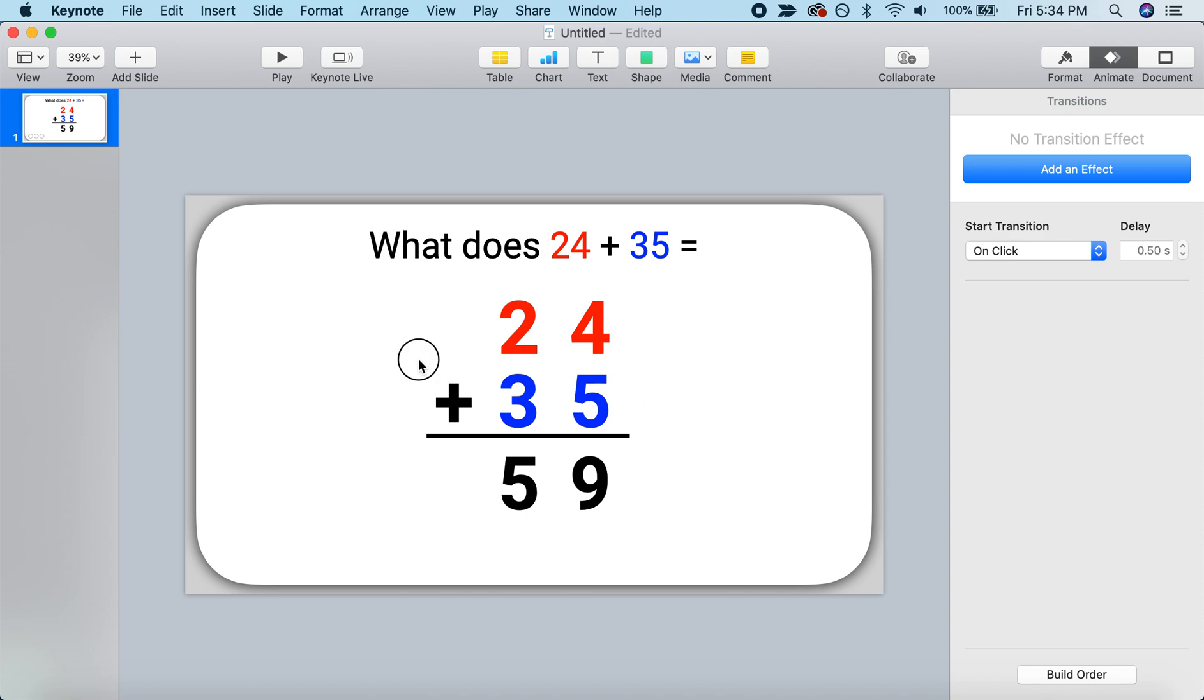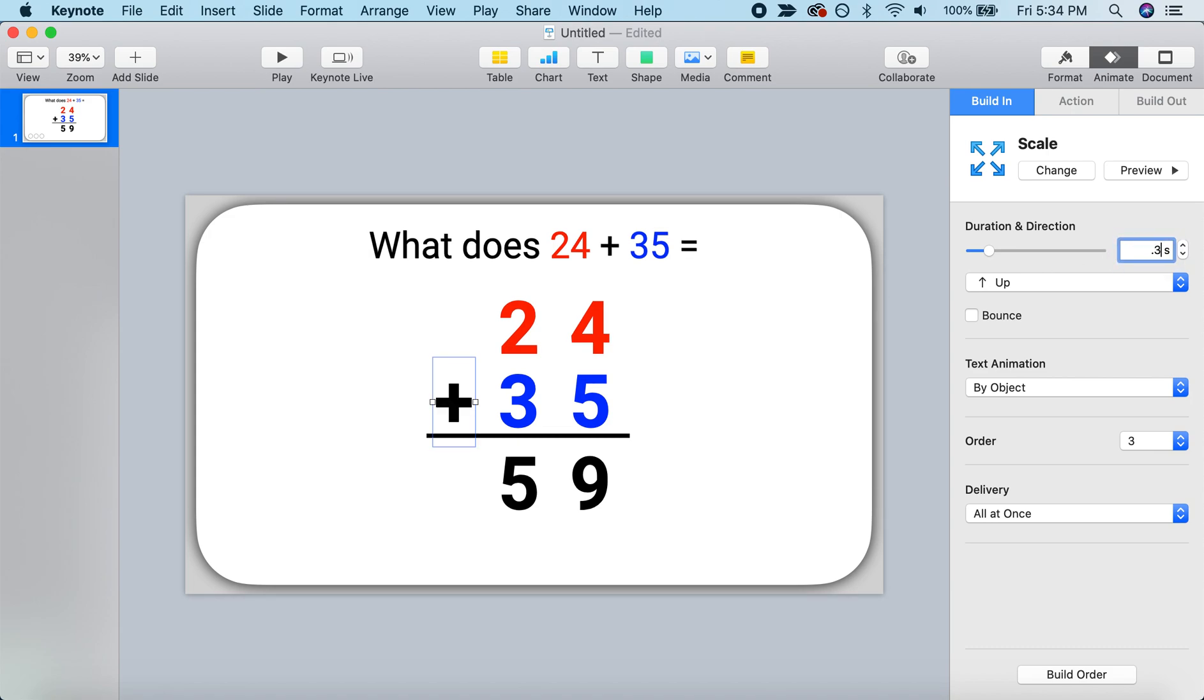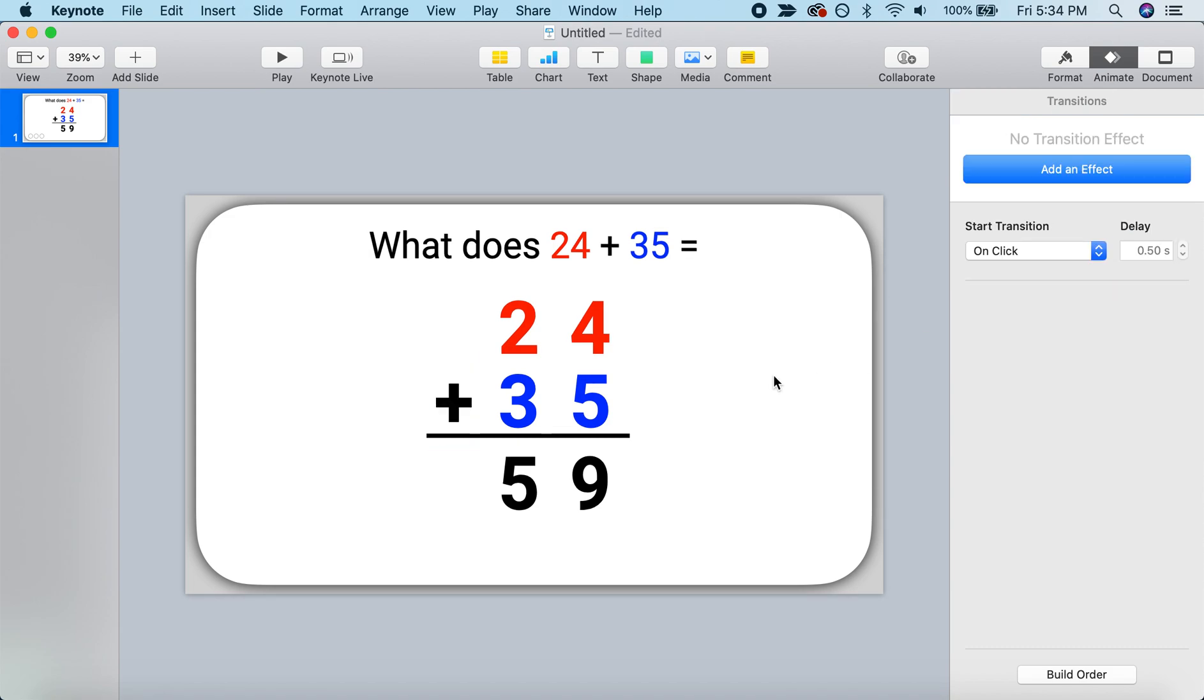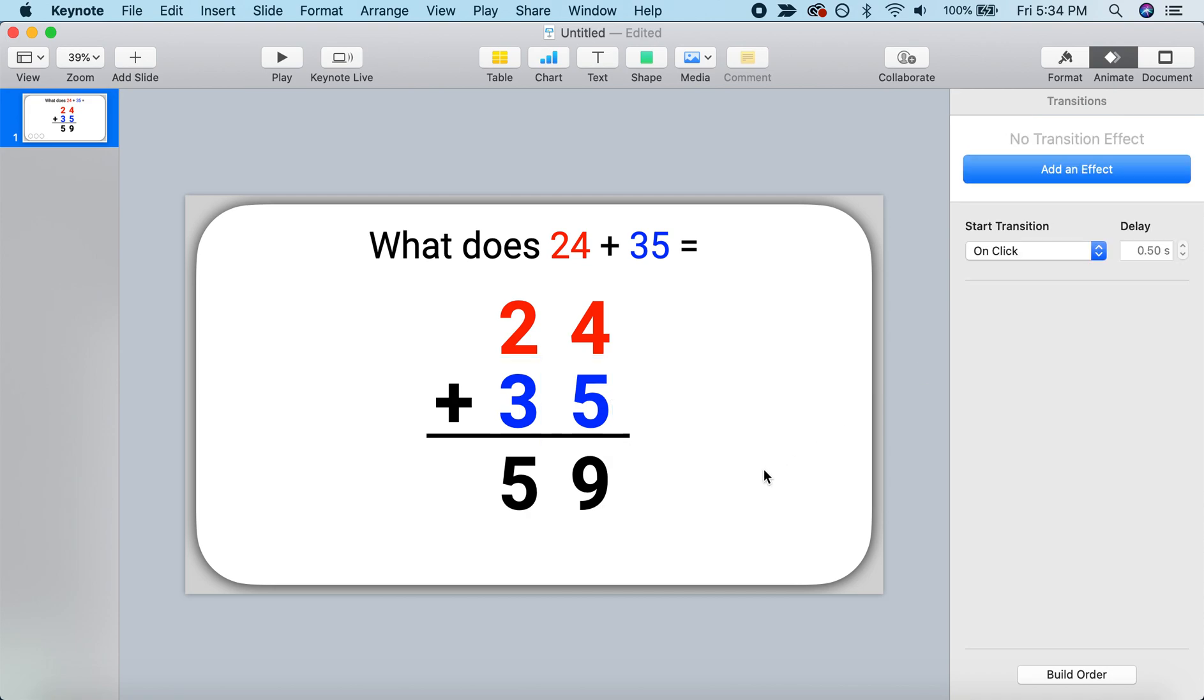Next thing I'll draw in is my plus symbol. So I'll animate that using the same effect. So scale, 0.3, let's do a bounce. And then we'll draw in 35. Same animations. Scale, 0.3 seconds with a bounce.